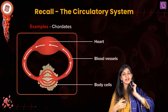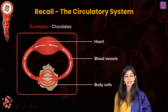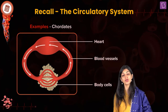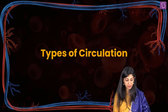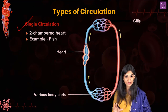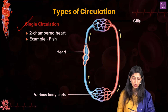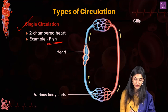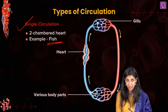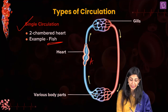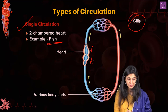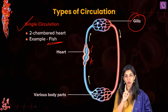Let's recall the circulatory system studied in the animal kingdom. Chordates have a closed circulatory system, but since the structure of the heart varies, we have different types of circulation. The simplest is single circulation — for example, in fishes with only two chambers (atrium and ventricle). The body parts give deoxygenated blood to the atria, which pass it to the ventricles, while gills give oxygenated blood to the body parts. Blood passes through the heart only once.